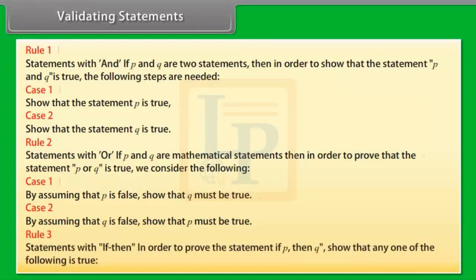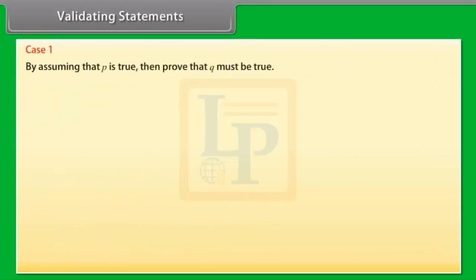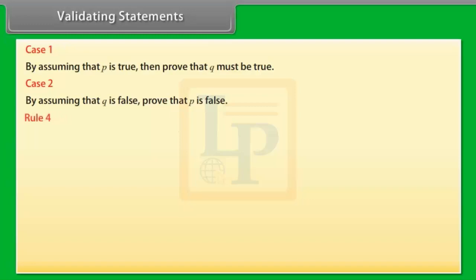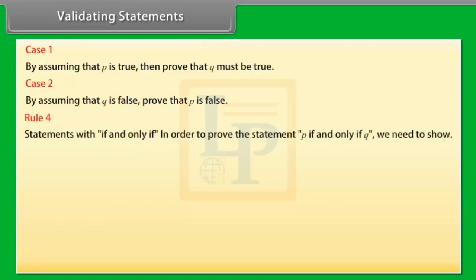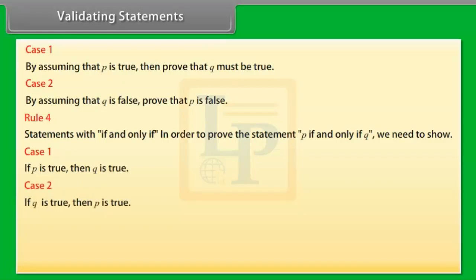Rule 3 — Statements with IF-THEN: To prove 'If P then Q,' show either (Case 1) assuming P is true, prove Q must be true; or (Case 2) assuming Q is false, prove P is false. Rule 4 — Statements with IF and ONLY IF: To prove P if and only if Q, show (Case 1) if P is true then Q is true, and (Case 2) if Q is true then P is true.